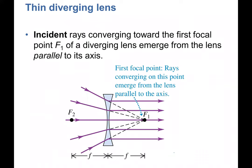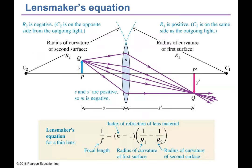If incident rays converge toward the first focal point of a diverging lens, they emerge parallel to the axis after refraction — no image is formed in the back. For finite-size objects the results are more interesting, and we'll use the equations and ray diagrams to explore them.